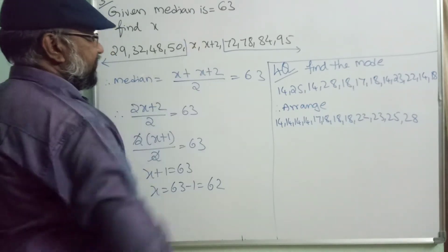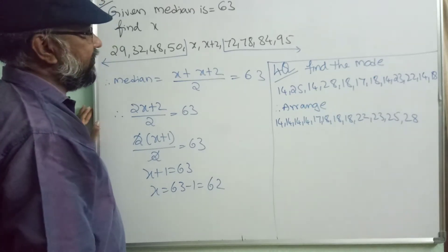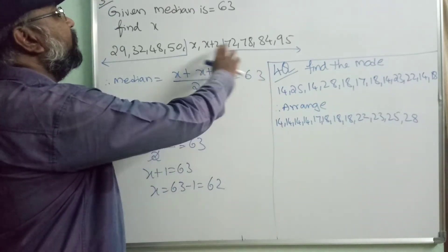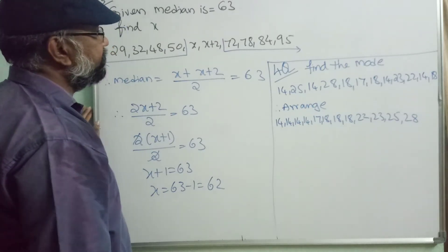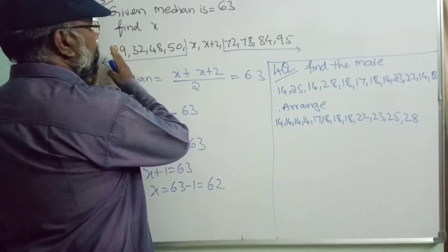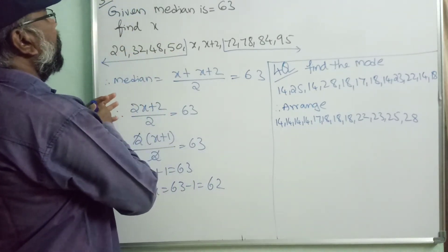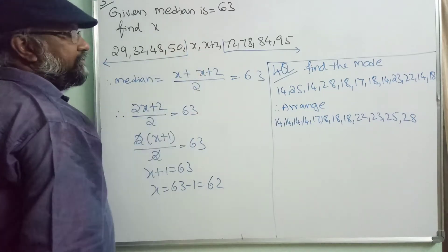So here we have an x and here we have another value x plus 2. Now we have to find x value, what is x value? So this is a median, these are the observations, given in observations.